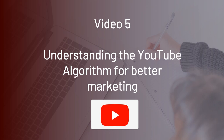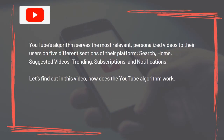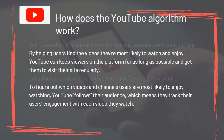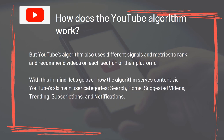Video 5 – Understanding the YouTube Algorithm for Better Marketing. YouTube's algorithm serves the most relevant, personalized videos to their users on five different sections of their platform: Search, Home, Suggested Videos, Trending, Subscriptions, and Notifications. By helping users find the videos they are most likely to watch and enjoy, YouTube can keep viewers on the platform for as long as possible and get them to visit their site regularly. To figure out which videos and channels users are most likely to enjoy watching, YouTube follows their audience, tracking users' engagement with each video they watch. YouTube's algorithm also uses different signals and metrics to rank and recommend videos on each section of their platform.